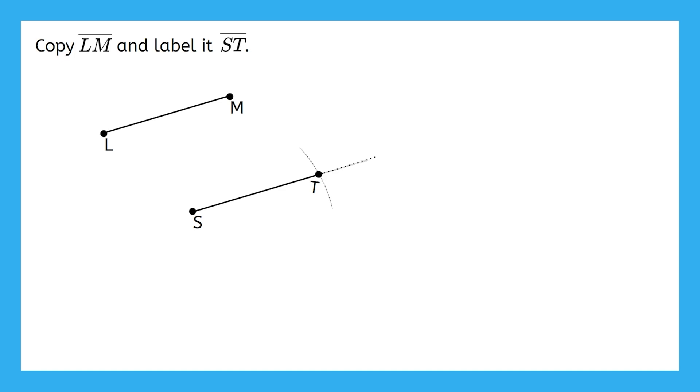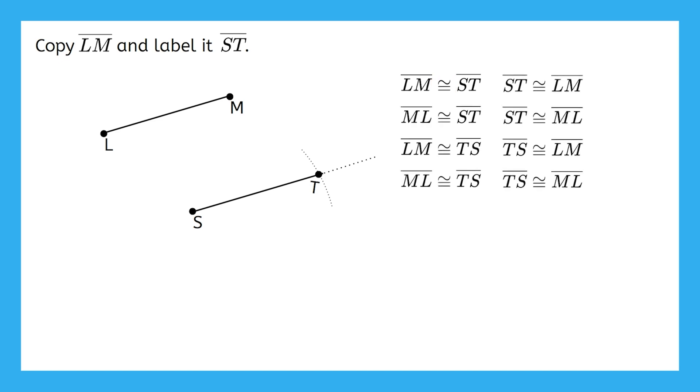We can now say that line segment LM is congruent to segment ST. The symbol here means congruent, or identical to. There are many other correct ways to write that these line segments are congruent, but I'm going to stay with the way it was phrased in the original directions. It doesn't say in the directions that we have to write this congruence statement, but when we do write it, we verify to anyone looking at our drawing that we made sure segment ST is identical to segment LM.